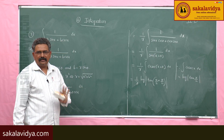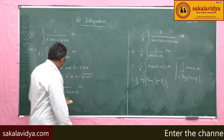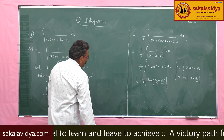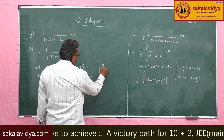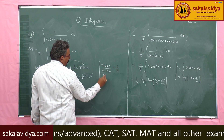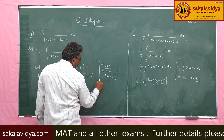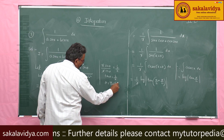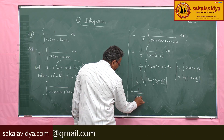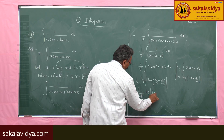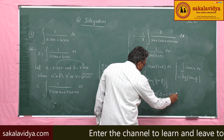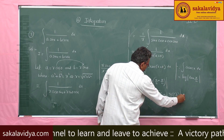Now let us replace R and θ in terms of A and B. The value of R is √(A² + B²). For θ, dividing R sin θ by R cos θ gives B/A, so tan θ = B/A, meaning θ = tan⁻¹(B/A). Therefore the answer is: 1/√(A² + B²) · log|tan(x/2 + (1/2)tan⁻¹(B/A))| + C.